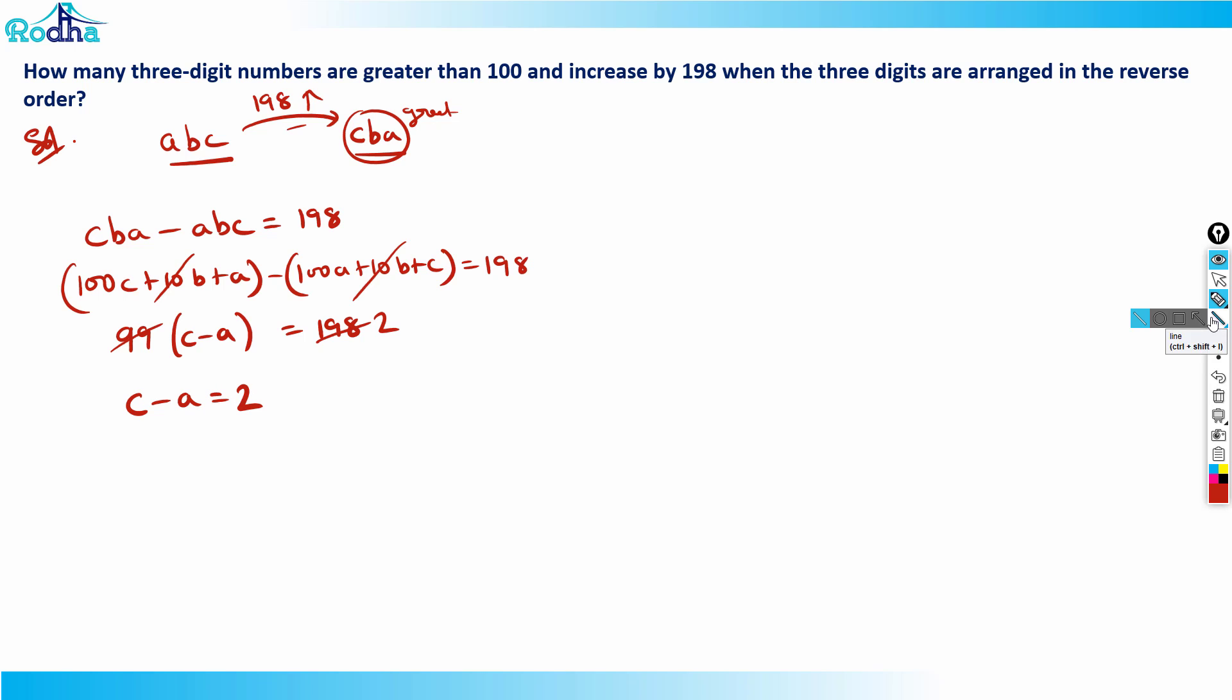Now I know that these numbers are actually digits. Digits have the constraint that they should always be from 0 to 9. All these a, b, c are digits and they can only be integers from 0 to 9. Now that means c minus a equals 2.